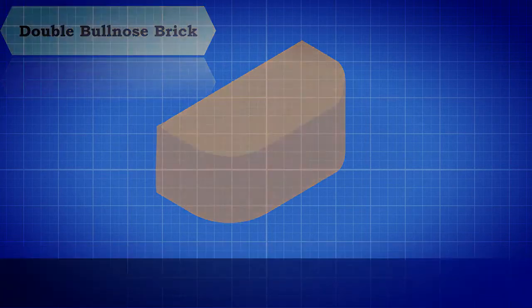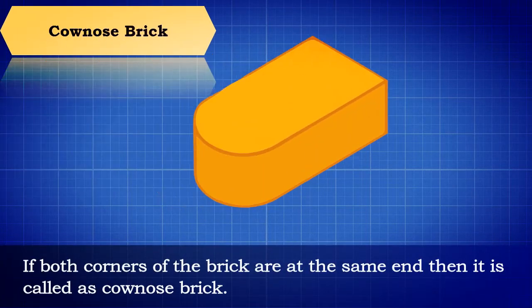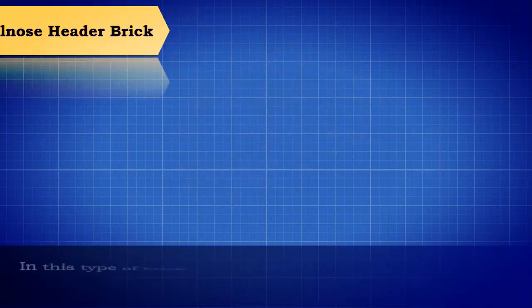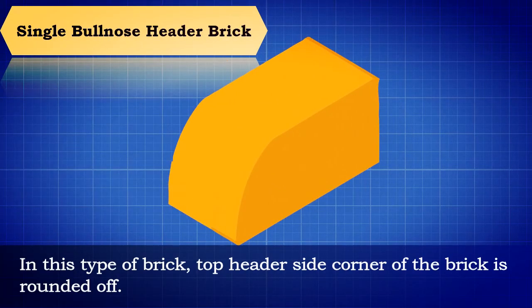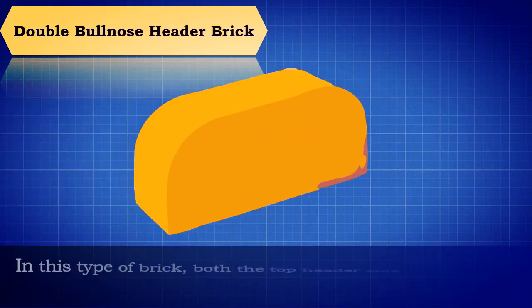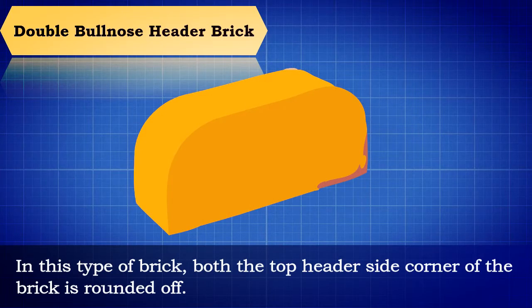If both corners of the brick are at the same end, then it is called a counters brick. Single bullnose header brick: in this type of brick, the top header side corner of the brick is rounded off.